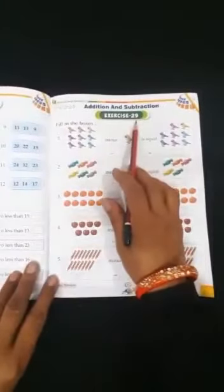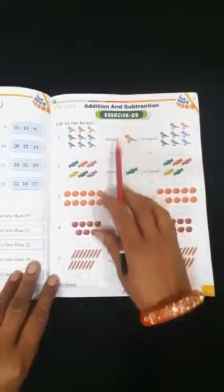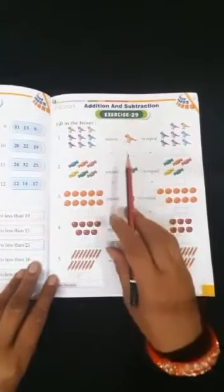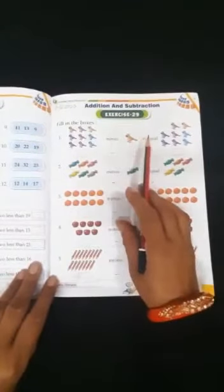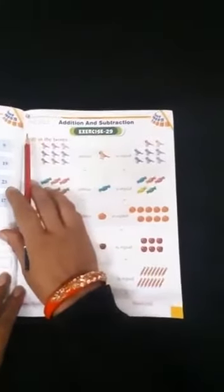Good morning children, welcome back to our mental math class. So open page number 33, exercise 29 subtraction and exercise 30 addition. Ok children, first you have to mention the date on the top.